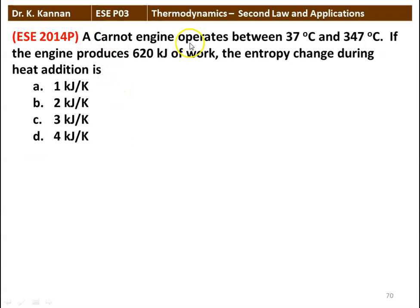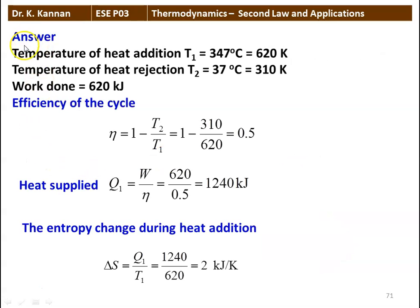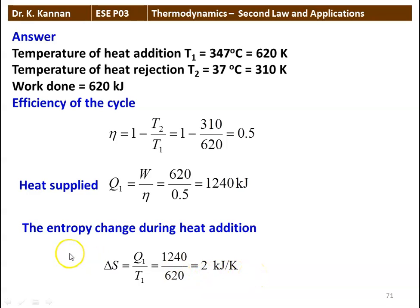Next question: A Carnot engine operates between 37°C and 347°C. If the engine produces 620 kJ of work, the entropy change during heat addition is: 1, 2, 3, or 4 kJ/K? The answer is 2 kJ/K. Temperature of heat addition = 347°C = 620 K; temperature of heat rejection = 37°C = 310 K. Efficiency = 1 − 310/620 = 0.5. Heat supplied Q1 = W/η = 620/0.5 = 1240 kJ. Entropy change during heat addition ΔS = Q1/T1 = 1240/620 = 2 kJ/K.